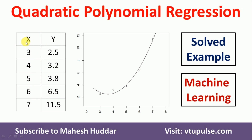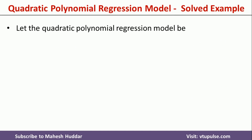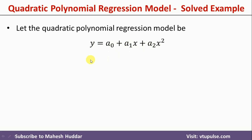Given the value of x, we should be in a position to calculate the value of y. The quadratic polynomial regression equation looks something like this: y is equal to a0 plus a1x plus a2x squared, where x is the independent variable and y is the dependent variable. Given the value of x, if you know the values of a0, a1, and a2, we will be able to calculate the value of y.